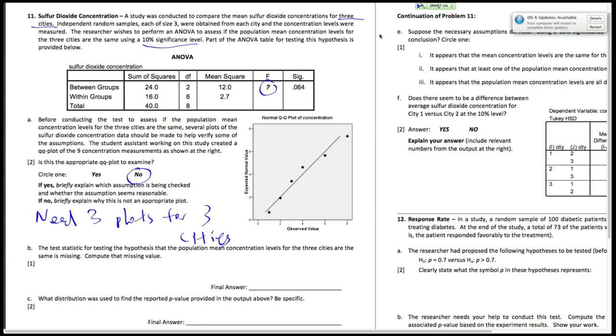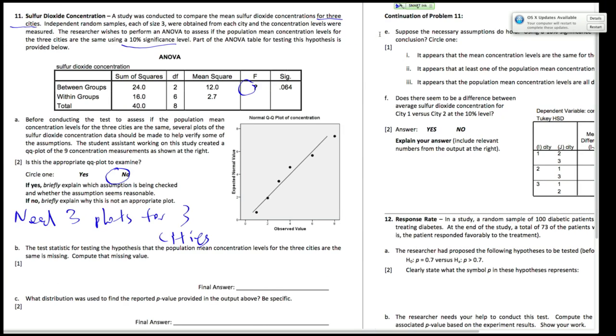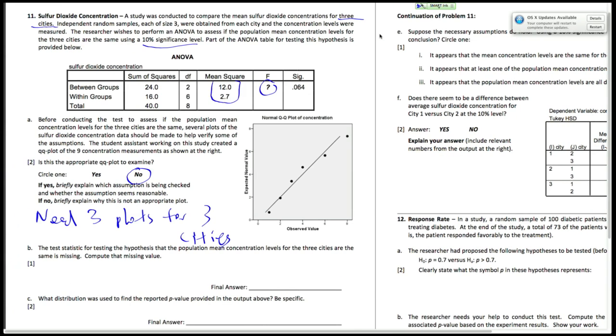Now the test statistic here is missing, so we need to compute it for part B. And so the way to compute it is by taking the between groups sum of squares and divide by the within groups sum of squares. And the place you find that is right here. So we have between groups is 12.0 divided by 2.7, and that gives us an answer of 4.44.